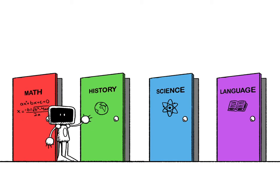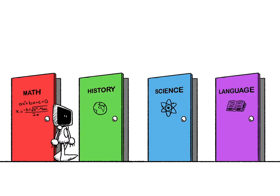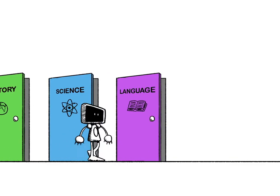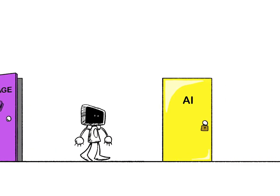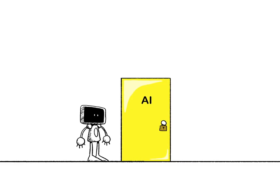Most of your traditional education so far has probably been around topics like math, history, science, and language. However, while artificial intelligence is impacting every aspect of our lives, it remains widely not taught in schools.